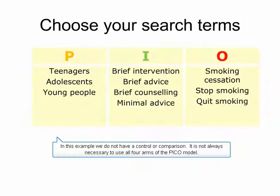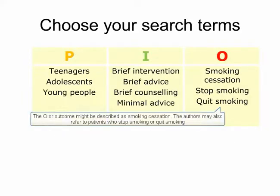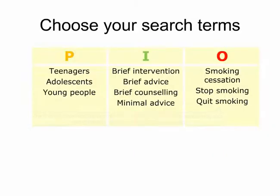In this example, we do not have a control or comparison. It's not always necessary to use all four arms of the PICO model. The O, or outcome, might be described as smoking cessation. The authors may also refer to patients who stop smoking or quit smoking.